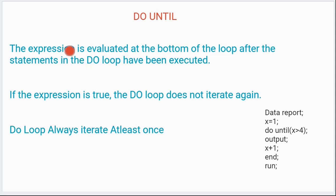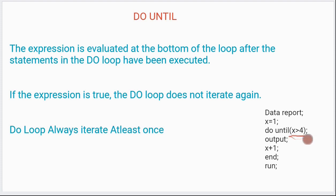So over here, the expression is evaluated at the bottom. What is the expression? Can you see the example here? DO UNTIL x is greater than four — so this is your expression, next to your DO UNTIL. This expression will be evaluated at the last of the loop, after the statements in the DO loop have been executed.